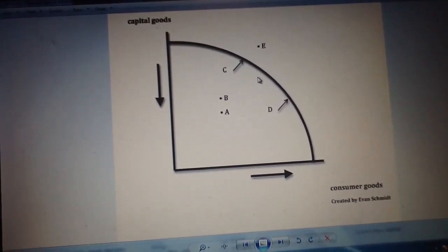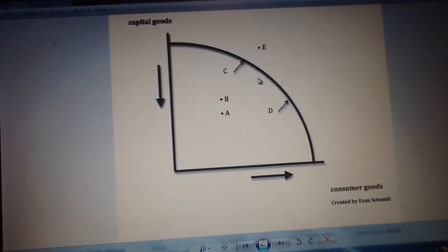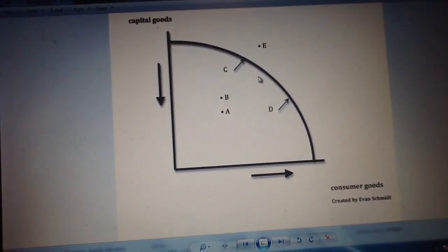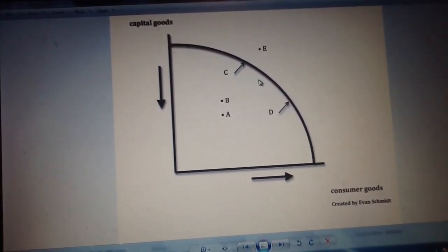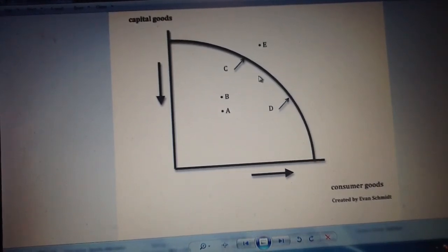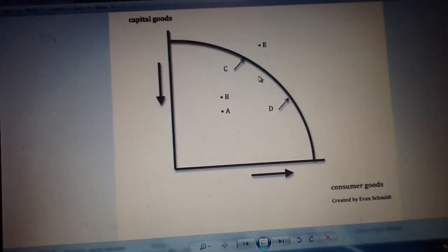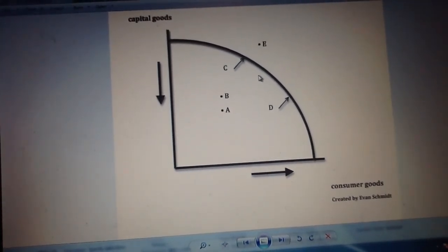The third factor is resources. If you have an increase in resources, you can produce more for a cheaper price and drive out what you're producing. The fourth factor is labor. If you have more workers, you can produce more in the same amount of time, which shifts that boundary out.